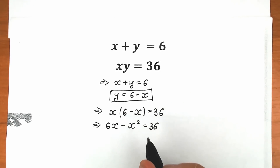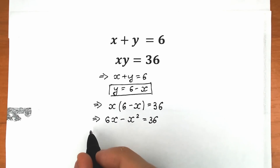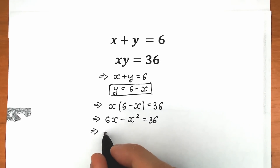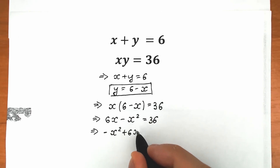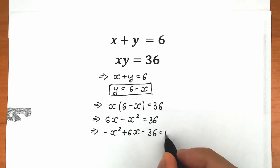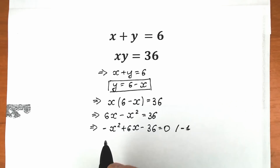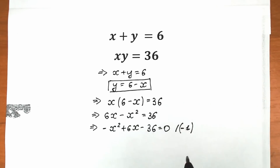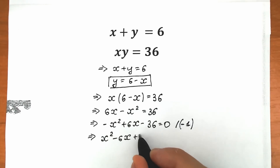Now let's bring everything from right to left because it looks like a quadratic equation — we have x squared, we have x, we have a constant. So we have minus x squared plus 6x minus 36 equal to zero. We multiply both sides by minus one, and as a result we have our quadratic equation: x squared minus 6x plus 36 equal to zero.